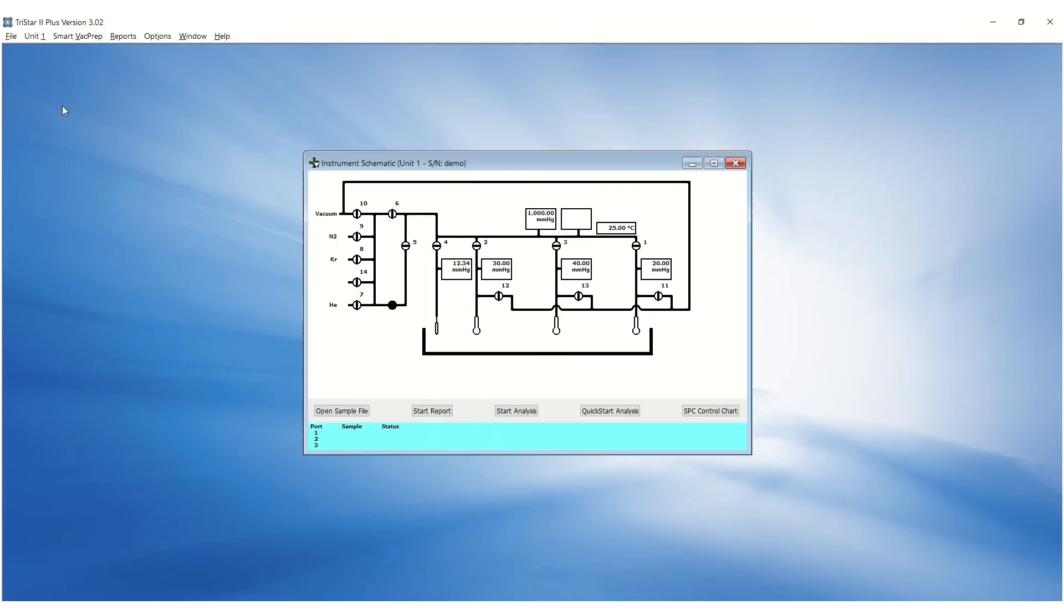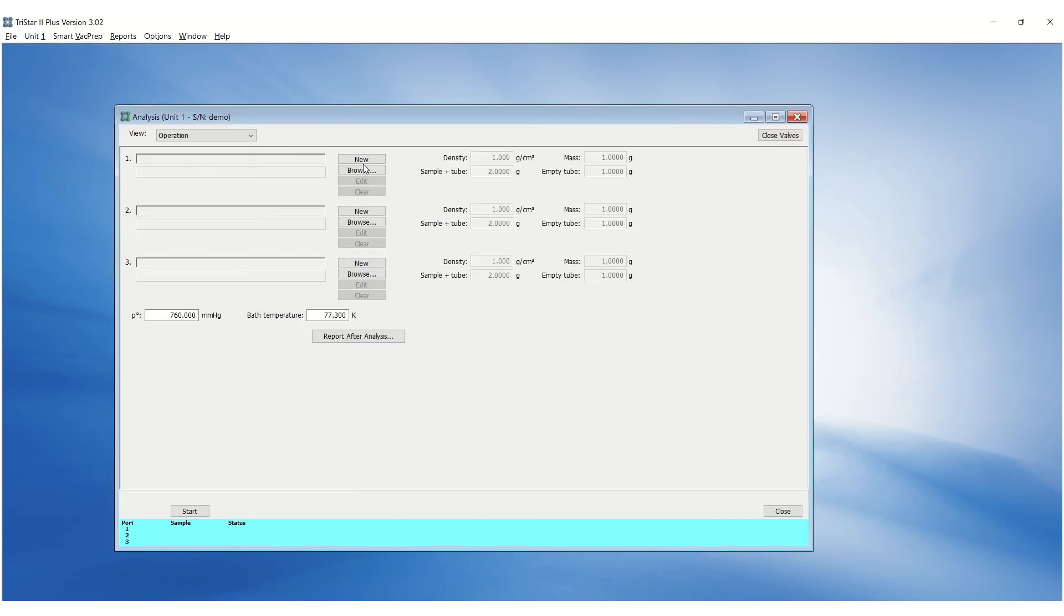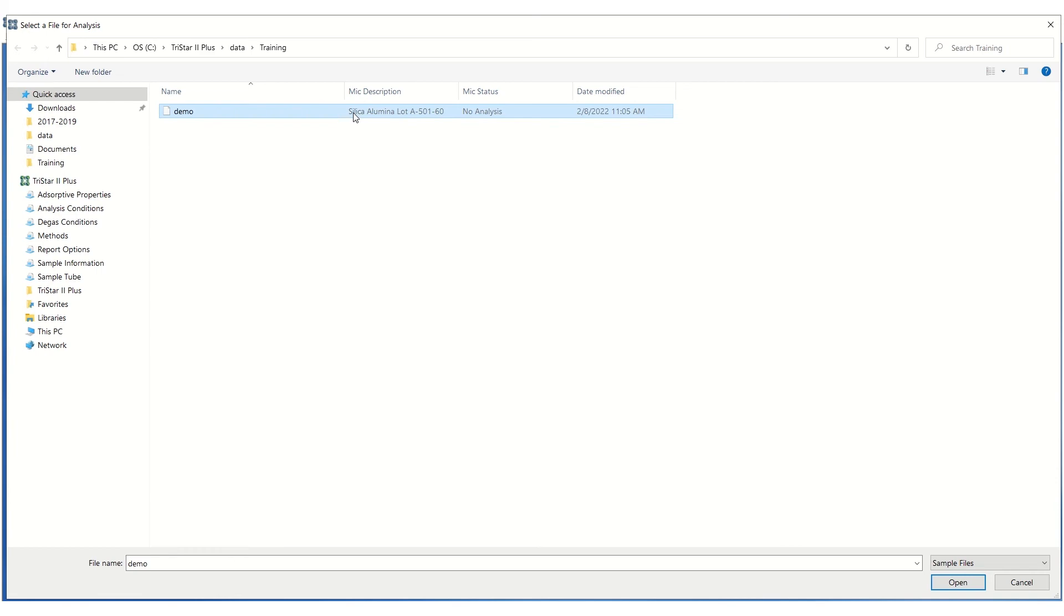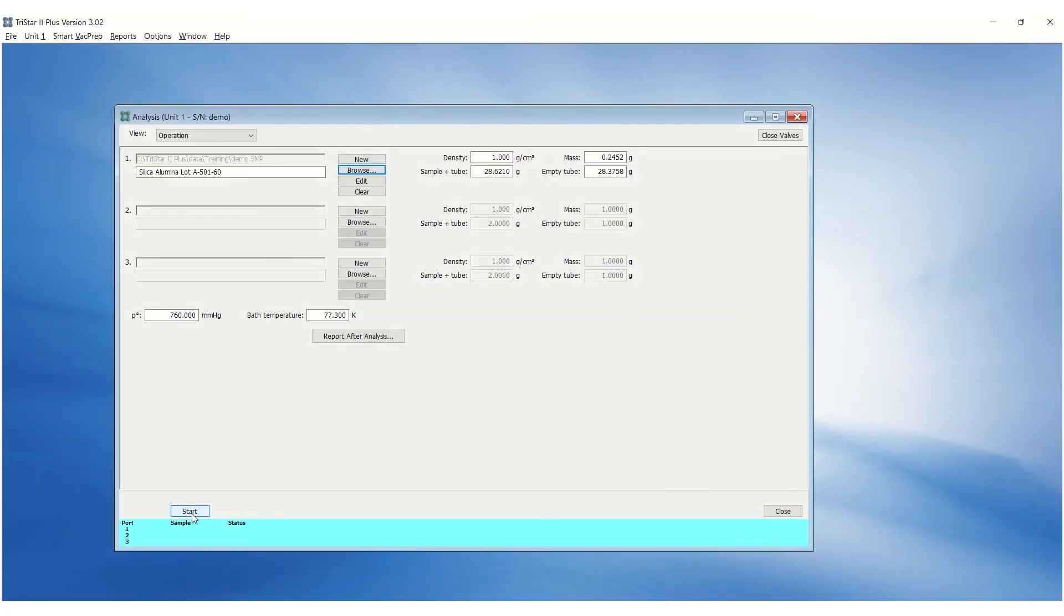To start an analysis, go to the Unit menu and click on Sample Analysis. Browse and select the sample files for the appropriate sample ports. Click Start.